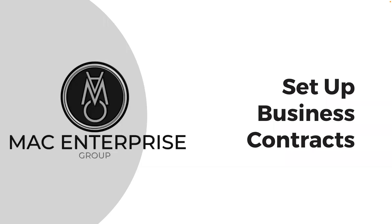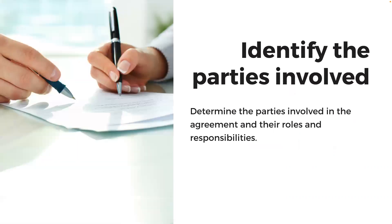Business owners should set up business contracts that are clear, specific, and legally sound, and that protect the interests of both parties involved in the agreement. The process of creating business contracts typically involves several steps. First, identify the parties involved — determine the parties involved in the agreement and their roles and responsibilities.